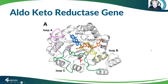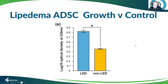This is the alpha keto reductase gene — as I explained, it's key to the metabolism of progesterone. This shows the cell growth, which is quite significantly different in lipedema tissue. These are stem cells harvested from lipedema tissue, and they multiply quite robustly compared to non-lipedema stem cells.